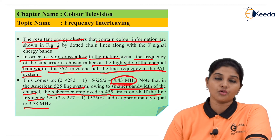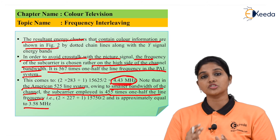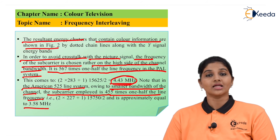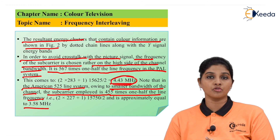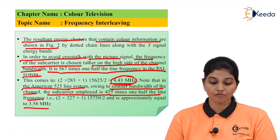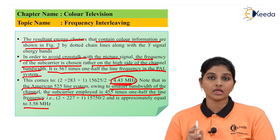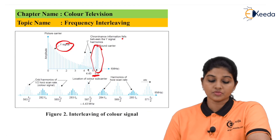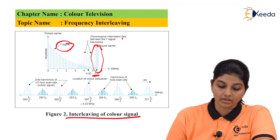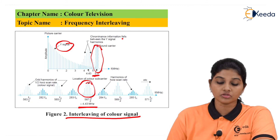This exact value of the color subcarrier is required to ensure synchronization between transmitter and receiver, allow the receiver to accurately recover the original information, and provide compatibility between color and monochrome television systems. For 525-line systems the color subcarrier is 3.58 MHz, and for 625-line systems it is 4.43 MHz. The figure shows the interleaving of the color signal, with odd harmonics at half the scan rate and the color subcarrier located at 4.43 MHz.